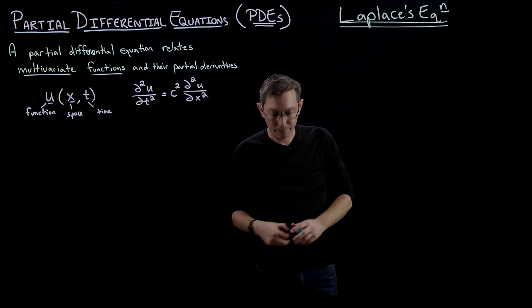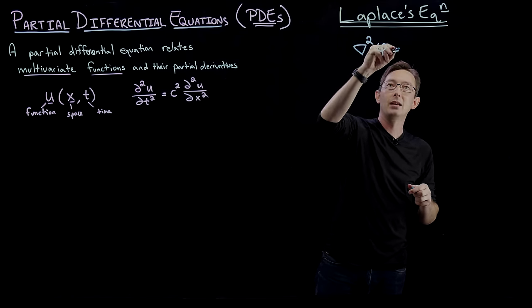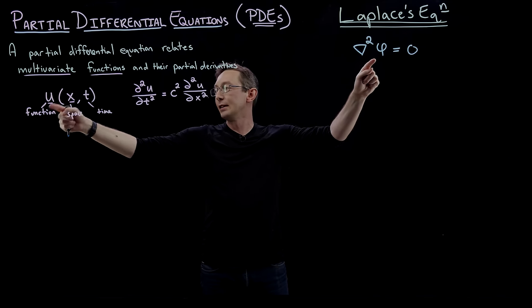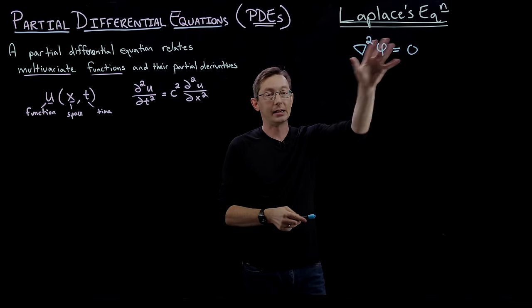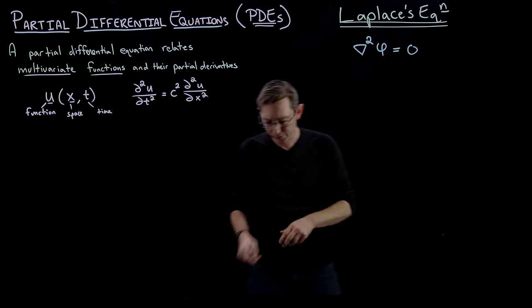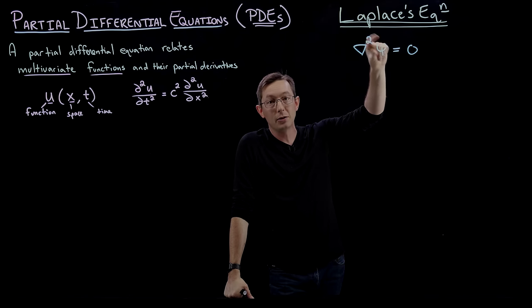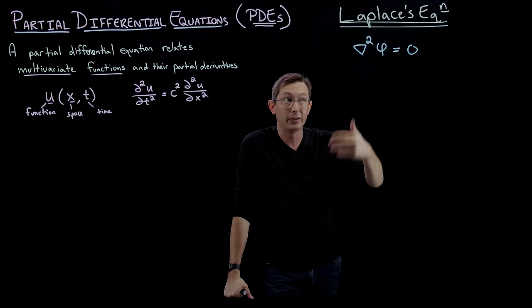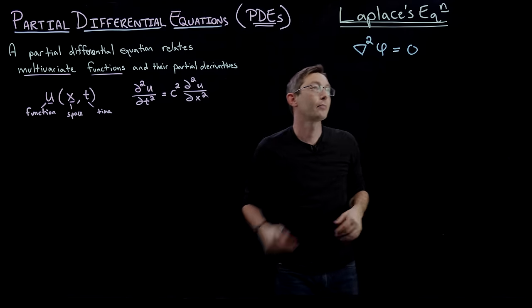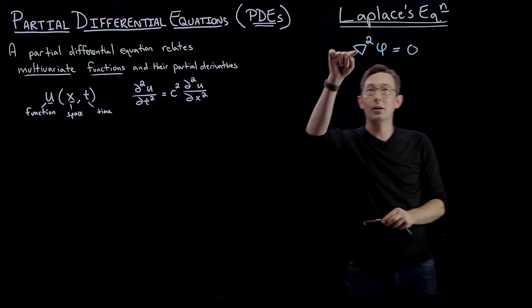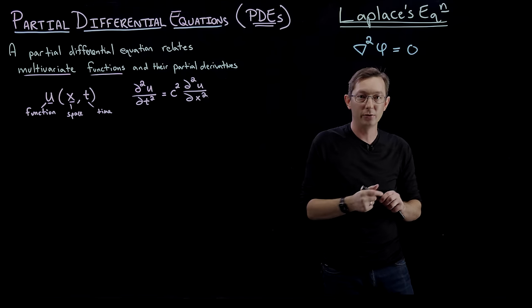Today we're going to talk about Laplace's equation, which we write as the Laplace operator of some function phi equals zero. This function phi is the state function we care about. Sometimes we call it a potential function, or a harmonic function if it satisfies Laplace's equation. We've already shown that these phis can be very useful for getting gradient flow fields — vector fields which are the gradient of phi — that are irrotational and incompressible, so-called potential flows. This solution phi gives you a potential you can use to make a gradient field.